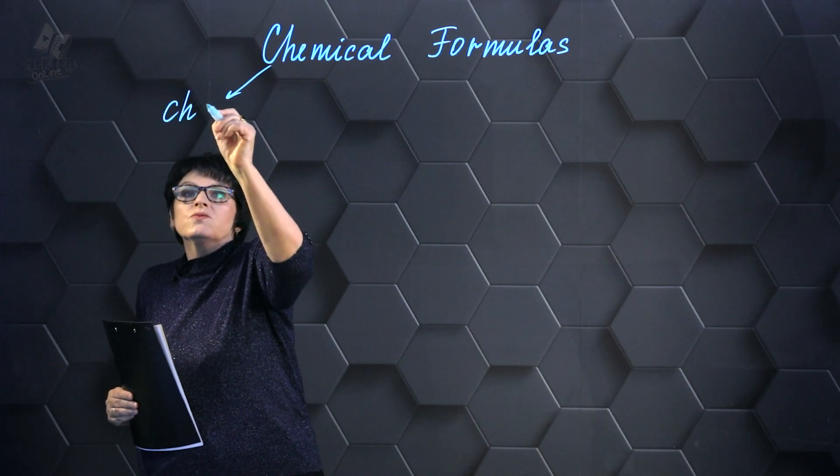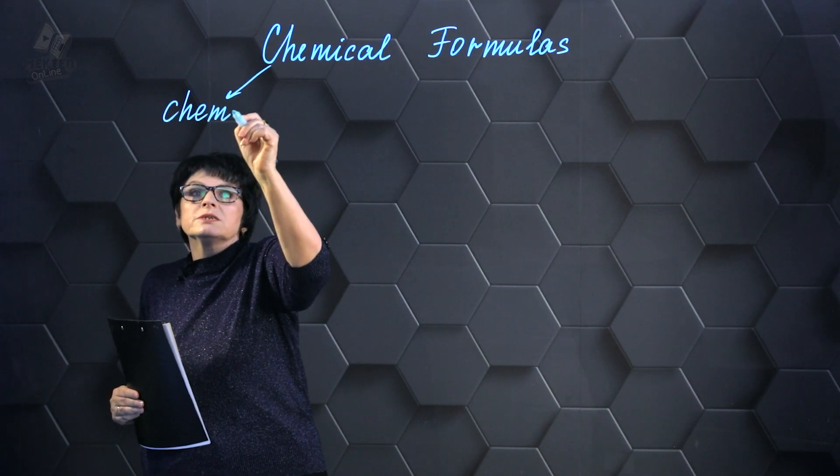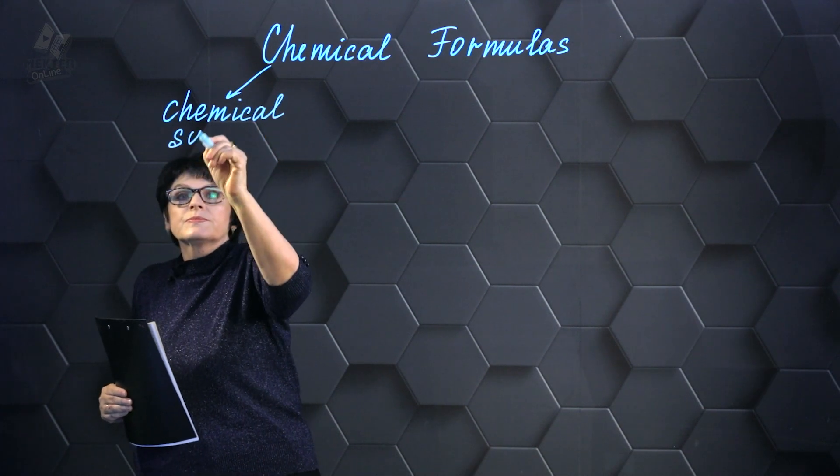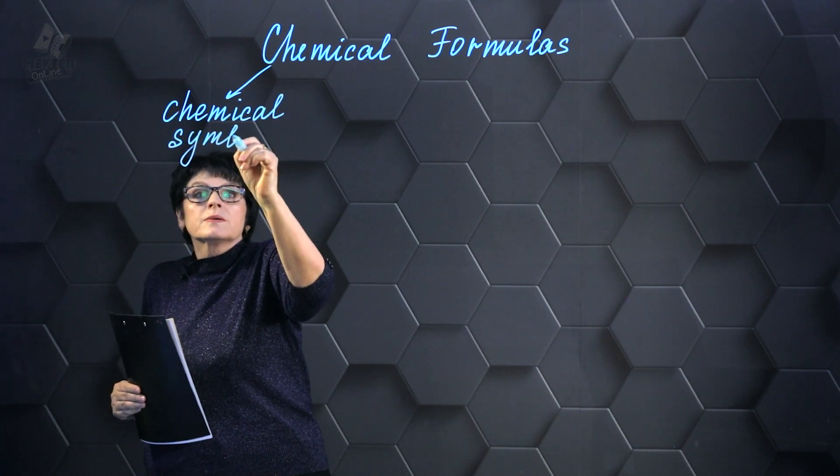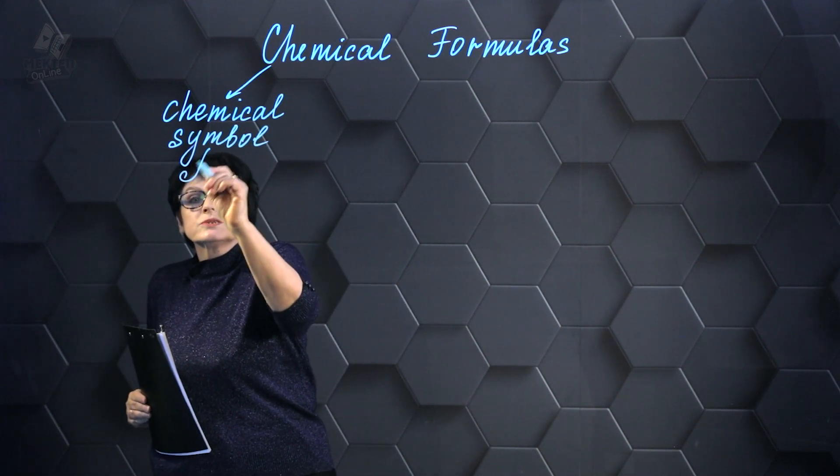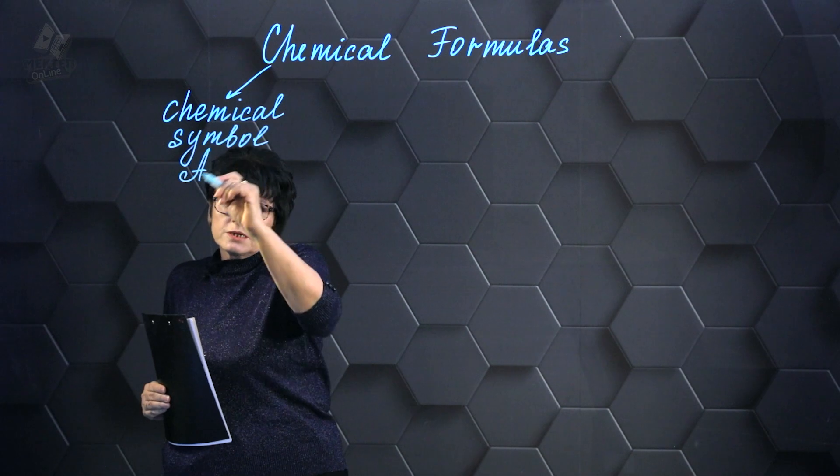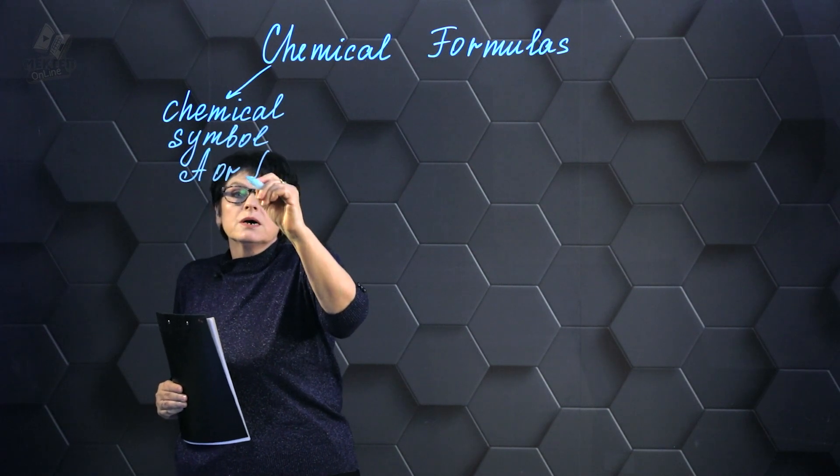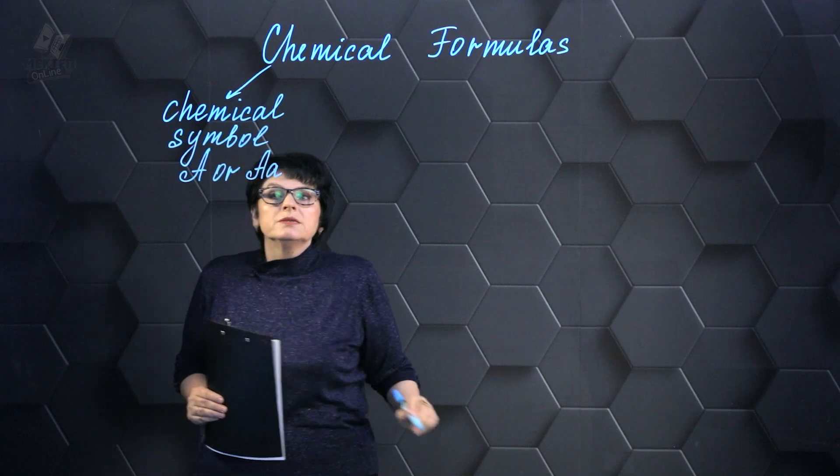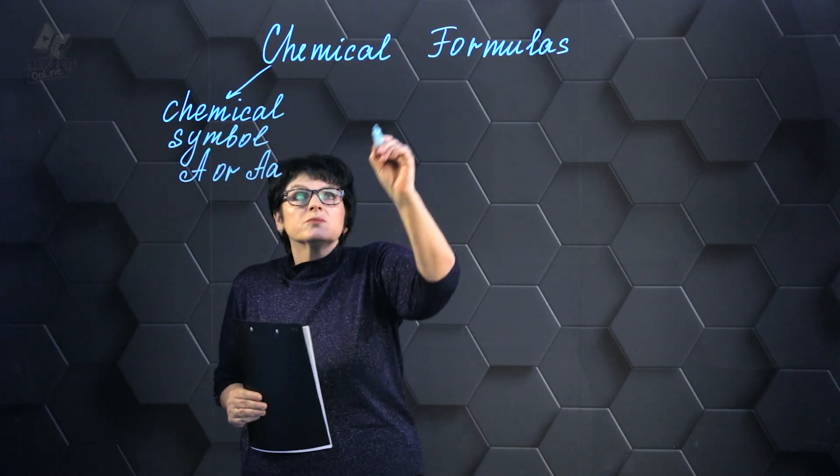Chemical symbols are usually written in the first place in formulas. These characters can be written with one letter, a capital letter, or the first letter capitalized, the second letter lowercase. Never is it written with two capital letters.